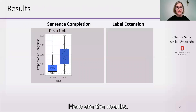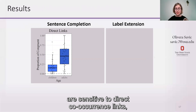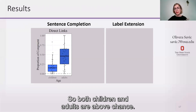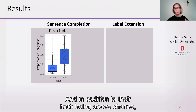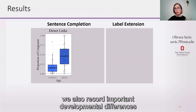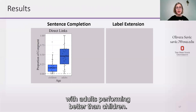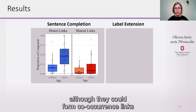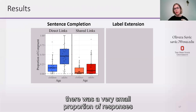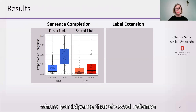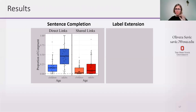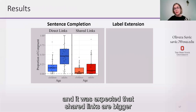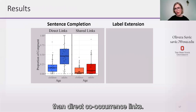Here are the results. We found that both children and adults are sensitive to direct co-occurrence links and can use them in a production task. On this graph, the chance level is zero, so both children and adults are above chance. In addition, we recorded important developmental differences, with adults performing better than children. Although participants could form direct co-occurrence links and rely on them, there was a very small proportion of responses showing reliance on shared co-occurrence links — though remember that in the sentence completion task, participants were not forced to rely on shared links, and it is expected that shared links are weaker.